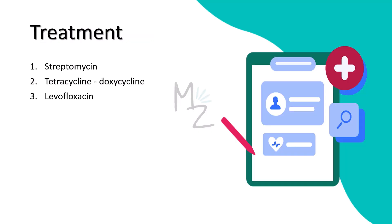Treatment: the treatment of choice is a combination of streptomycin and a tetracycline such as doxycycline, although streptomycin alone can be used. Levofloxacin can also be used. There is no significant antibiotic resistance. Importantly, bubonic plague progresses rapidly, so treatment should not wait for the results of bacteriologic culture or other tests. Incision and drainage of buboes are not usually necessary.